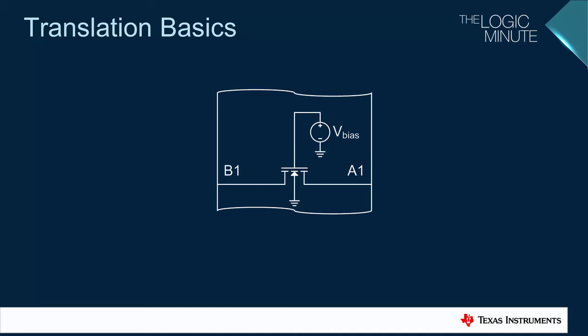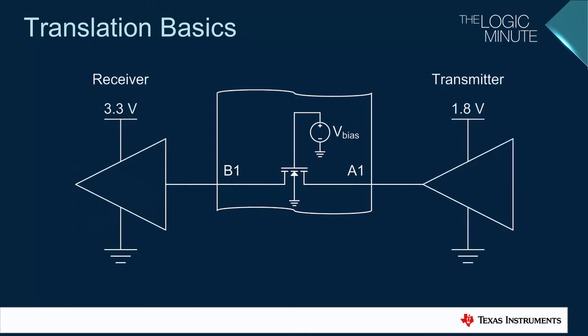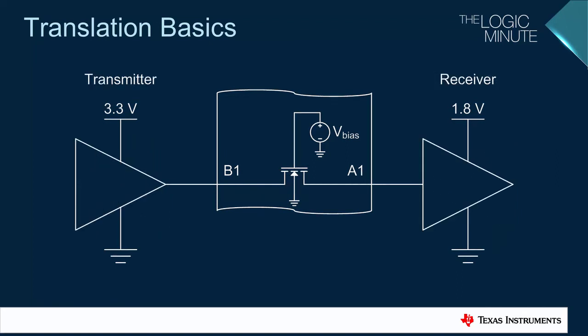In every device using a translator there will be a device outputting a signal, which we will refer to as the transmitter, and there will be a device receiving the translated signal, which we will refer to as the receiver. It's important to note that the transmitter and receiver can and often do change sides during operation.